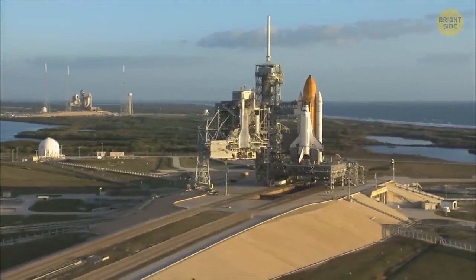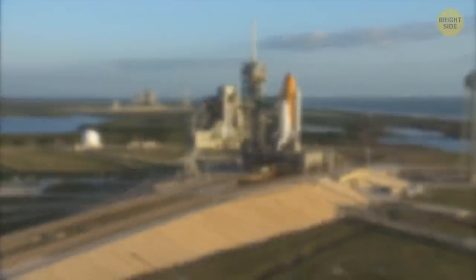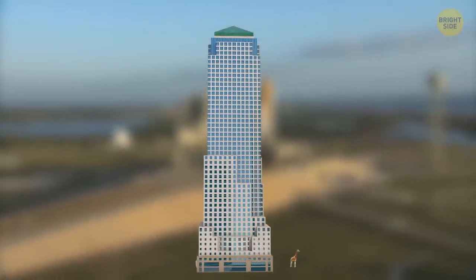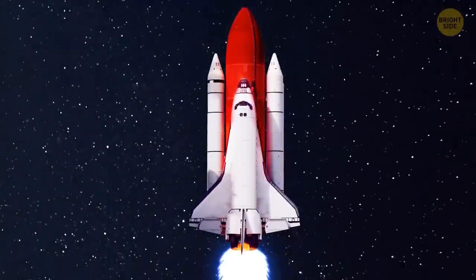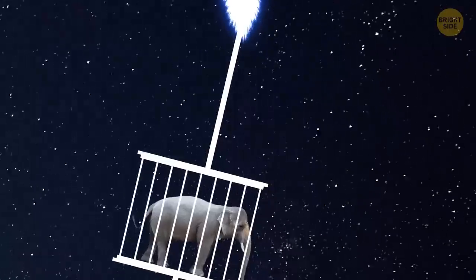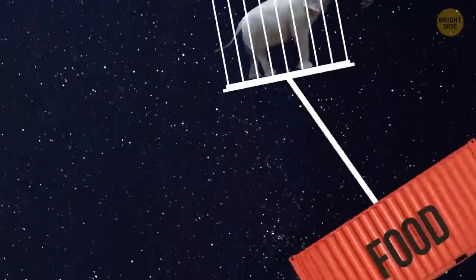The Falcon 9 booster rocket is already on the launch pad. It's as tall as a 22-story building, or 11 giraffes, and it can get about 8 tons of cargo into orbit. You could send a big elephant into space, and a supply of food for it.